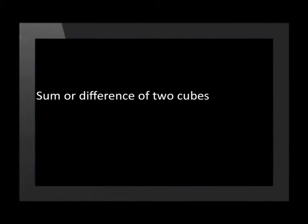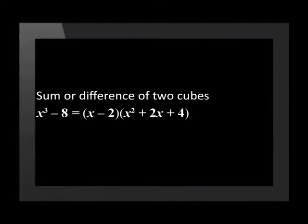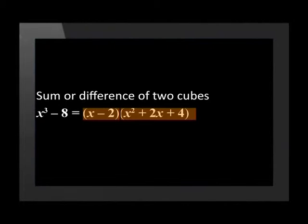The last way to factorize is by the sum or difference of two cubes. x cubed minus 8 can therefore be factorized into two brackets. The first bracket is x minus 2 and the second bracket will be x squared plus 2x plus 4. Let us join Tebo and find out how we can use the method of factorization to solve a quadratic equation.